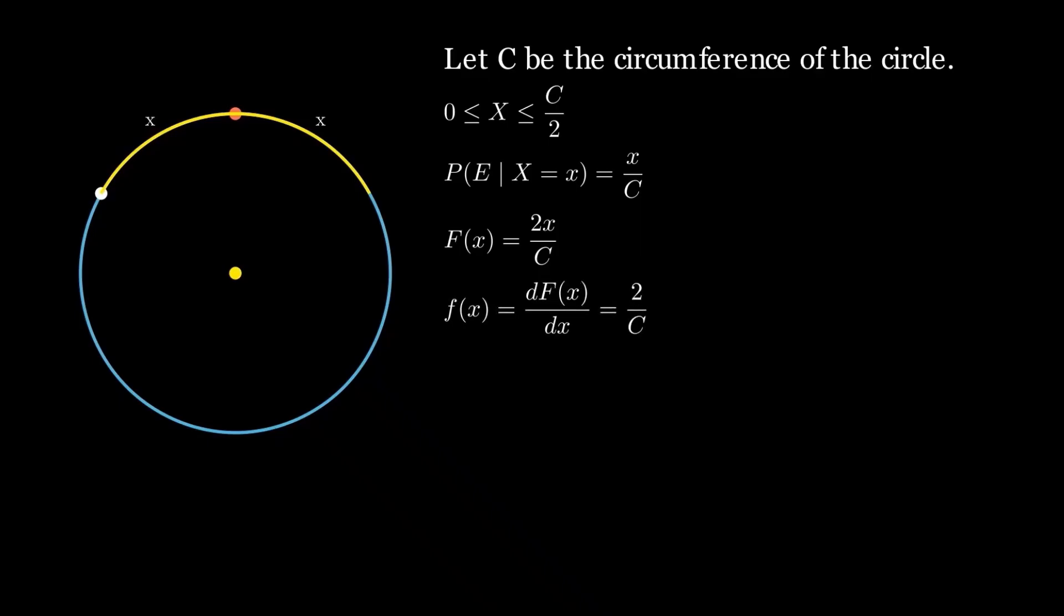Now, using the law of total probability for the continuous case, the probability that the center lies inside the triangle is given by this integral. Evaluating this integral gives us the final answer of 1 fourth.